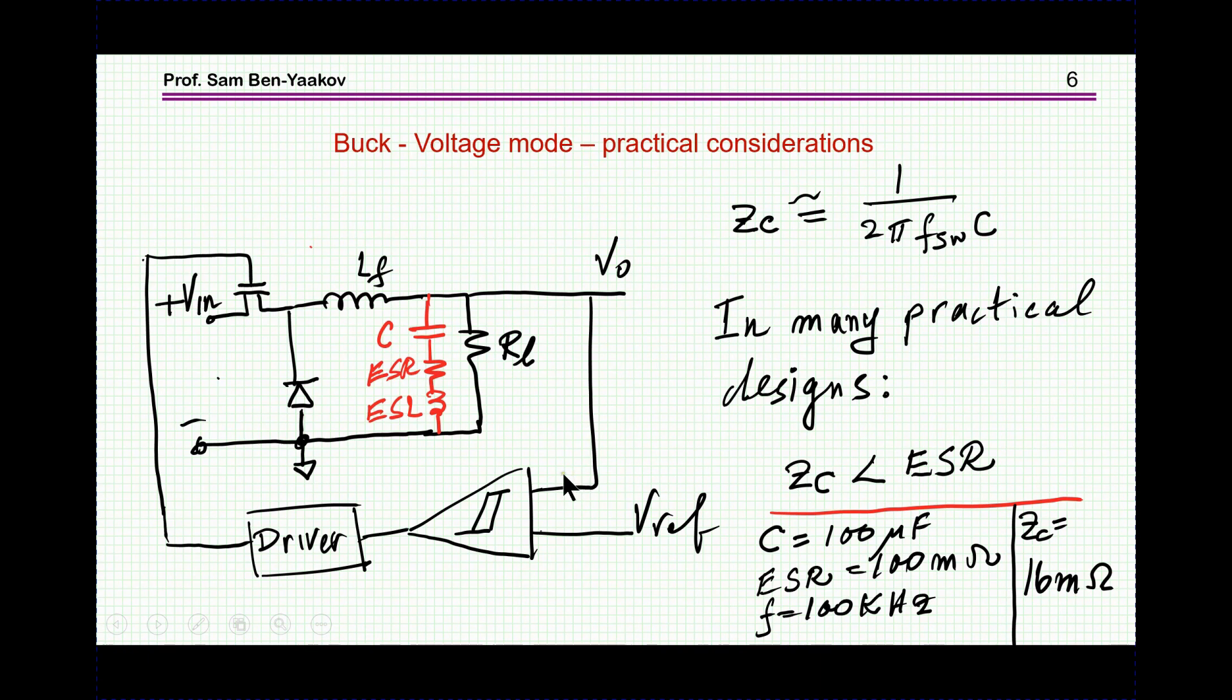The practical case hinges on the fact that the capacitor that we are going to use has an ESR and ESL. Now in many applications, just about most applications today, the impedance of the capacitance portion here is smaller than the ESR resistance. This is because the limiting factor in many cases is indeed the ESR for a step change in the current. So if the impedance of the capacitor is smaller than the resistance of ESR, what we see here at the switching frequency is a resistive element.